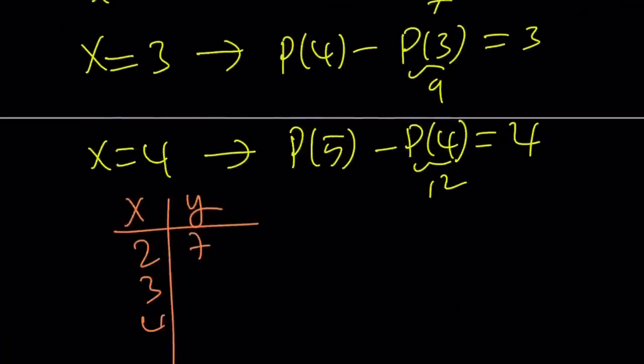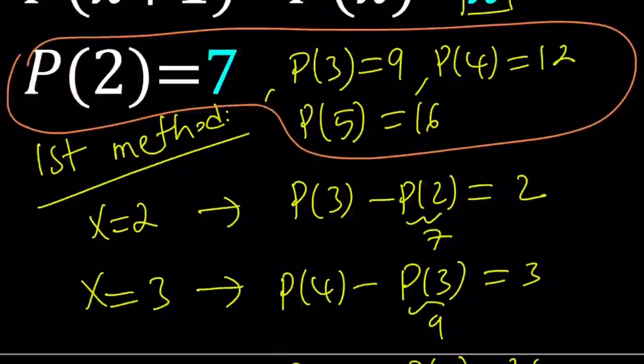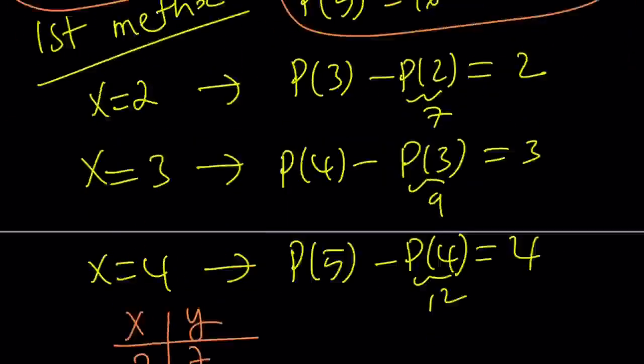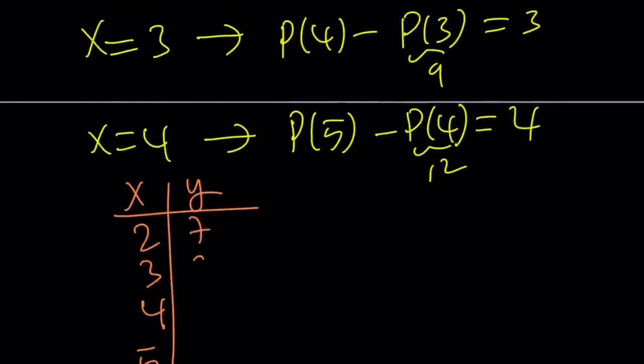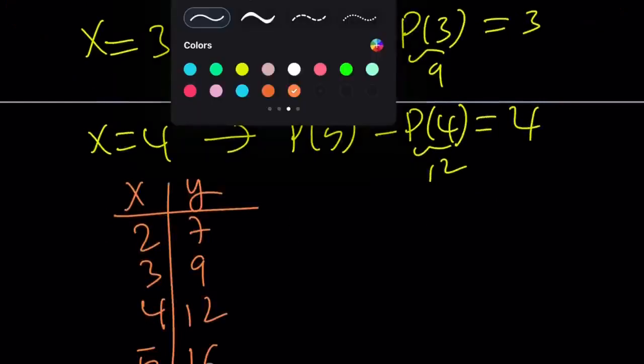2, 3, 4, and 5. Right? That's what I used for x values. And then I got 7, 9, 12, 16. Maybe you already got the idea. Maybe what I'm about to show you is really cool.